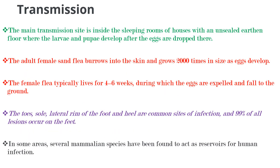The main transmission site is inside sleeping rooms of houses with unsealed earthen floors, where the larvae develop after eggs are dropped there. The adult female sand flea burrows into the skin and grows 2,000 times in size as eggs develop. The female flea typically lives for 4 to 6 weeks, during which the eggs are expelled and fall to the ground.